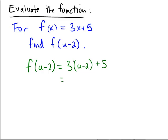However, usually we like to simplify these a little bit in case it's needed for the problem. So we'll go 3u minus 6 plus 5, and then minus 6 plus 5 would be minus 1. So for this problem's final answer, we'd probably say 3u minus 1.